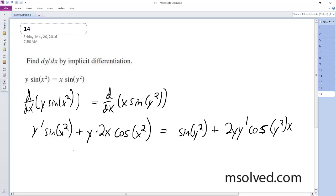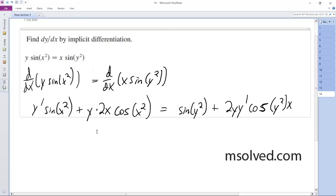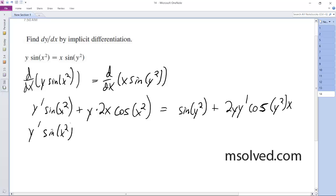Okay, so let me get the y primes on the same side. So y prime sine of x squared minus 2y y prime cosine of y squared x is equal to sine of y squared minus 2xy cosine of x squared.